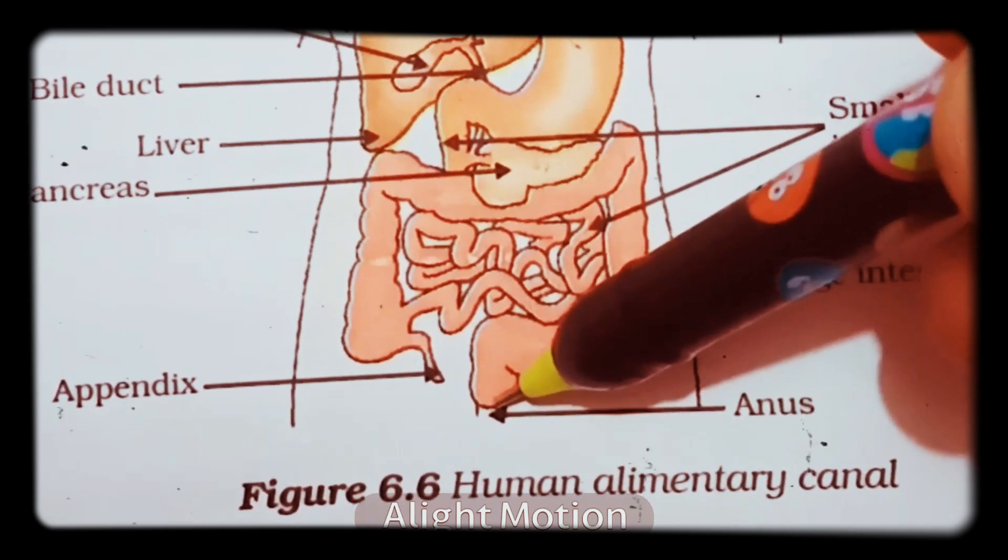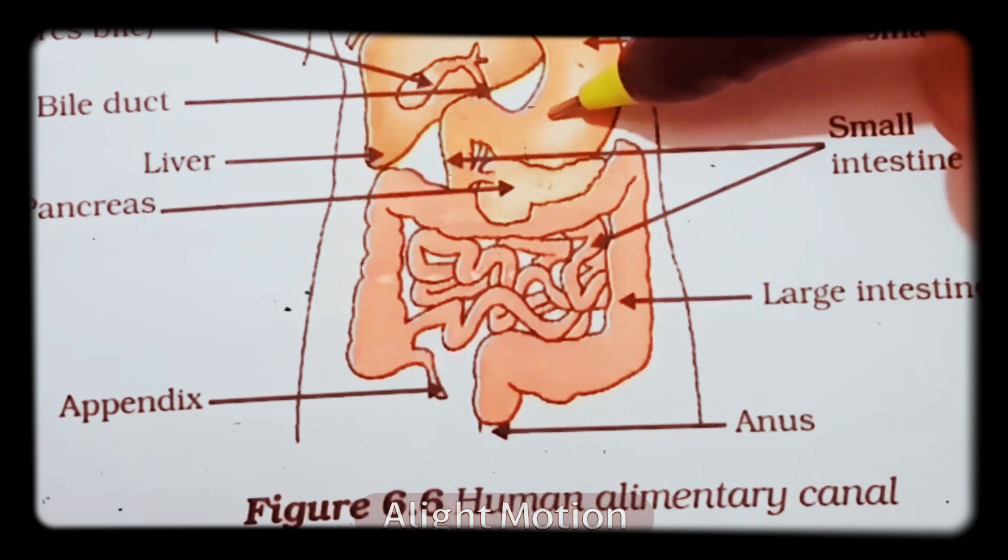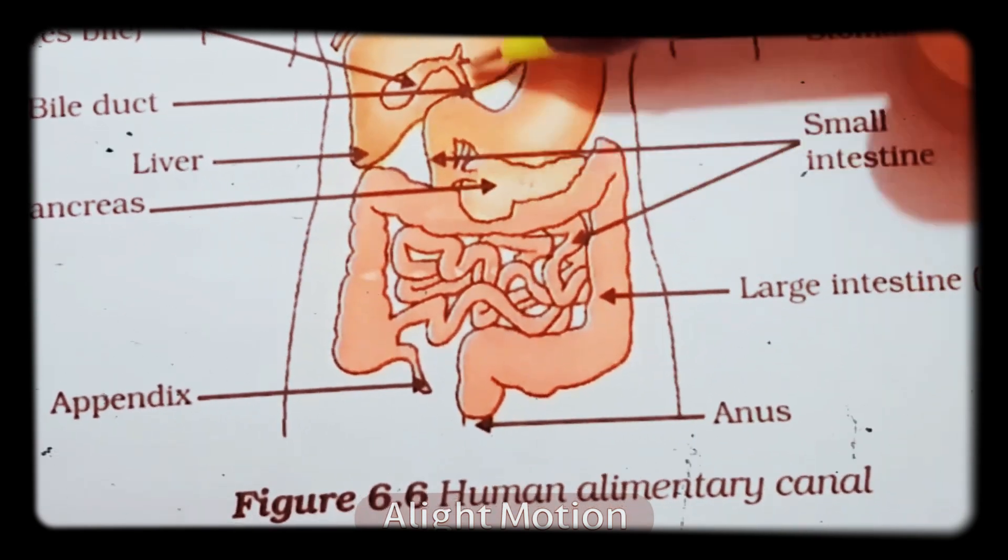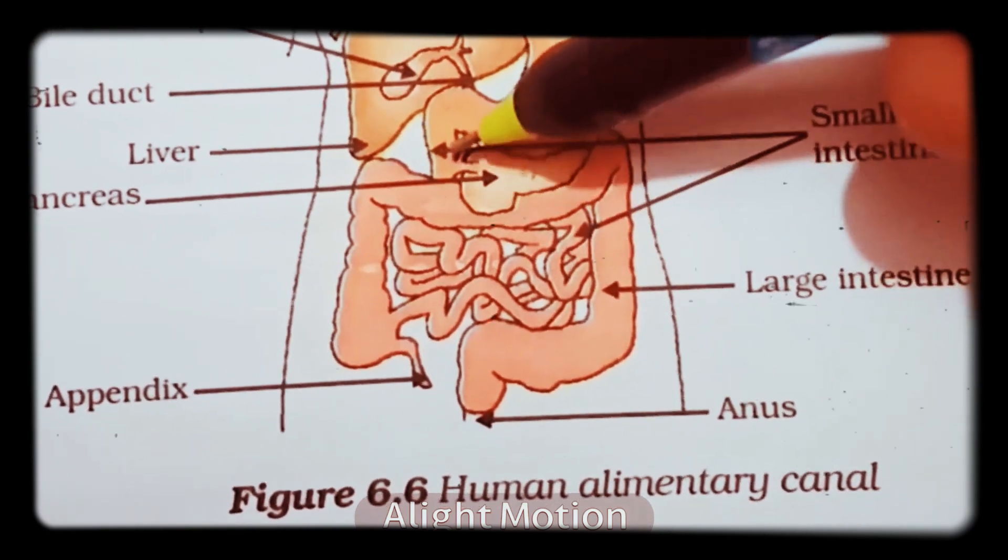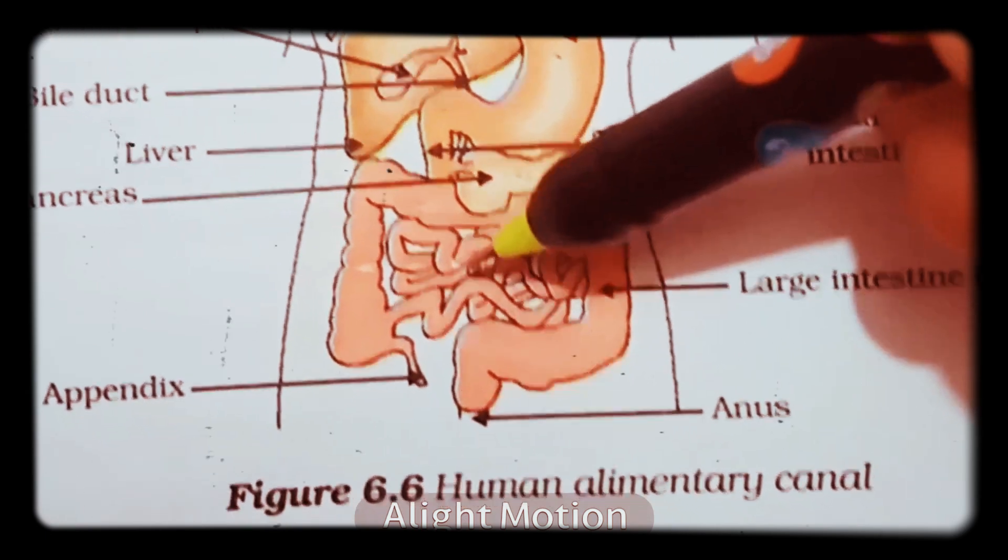Now coming to the small intestine, the food particles have already undergone some digestion with the help of the pancreas and pancreatic enzymes, as well as the bile juice. After digestion, the food comes to the small intestine region. Even in the small intestine, certain intestinal cells or glands are present.